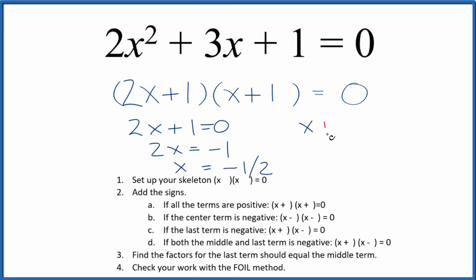Likewise, over here, we could say x plus 1 equals 0. So add negative 1 to both sides, we get x equals negative 1. And if you put negative 1 in for x here, do the math, it'll equal 0.